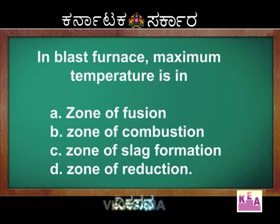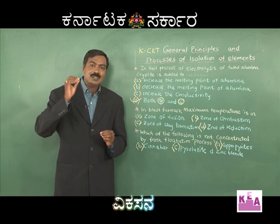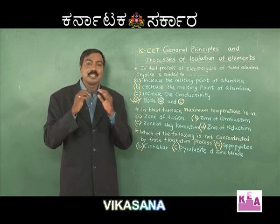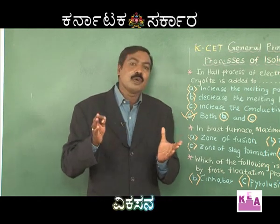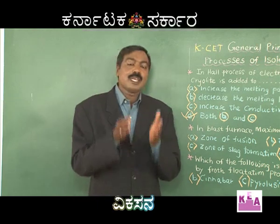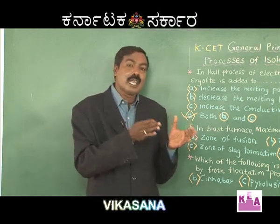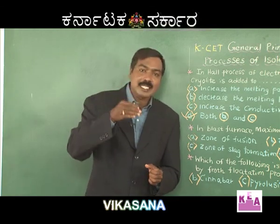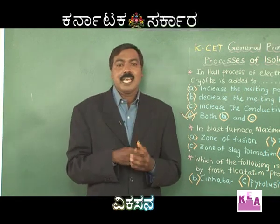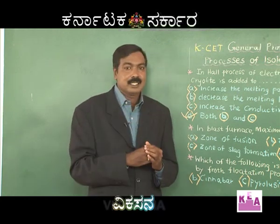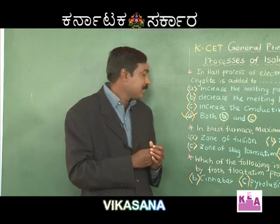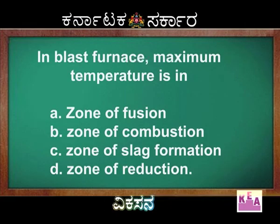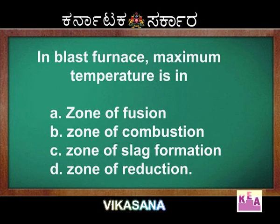In the blast furnace, which is used for the extraction of iron, the ore is mixed with limestone and coke — this mixture is called the charge. The charge is introduced into the blast furnace and air is blown through. Various reactions take place at various zones: the zone of reduction, zone of combustion, and zone of slag formation.